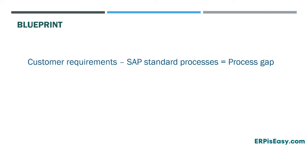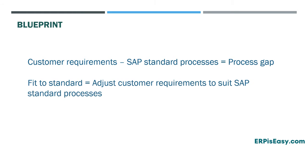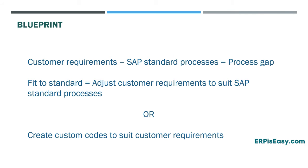The next phase is the blueprint phase. Blueprint workshops happen during this phase, where the customer's requirements are analyzed against standard SAP business processes. Then the gaps will be identified and a plan will be created about how to address those gaps. Either the current business processes will be changed to suit SAP's standard business processes, or custom codes will be created to satisfy customer requirements in the SAP system.